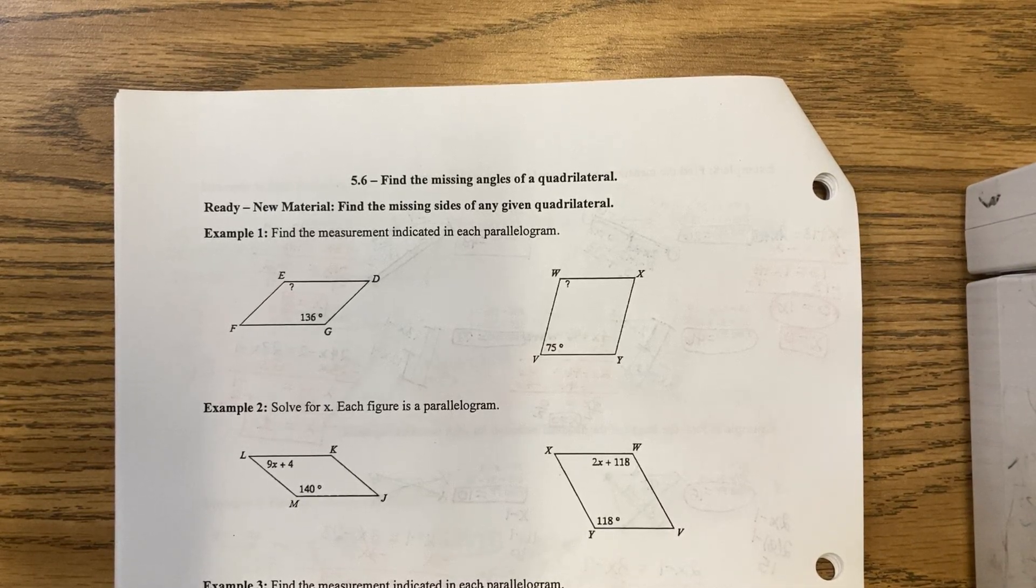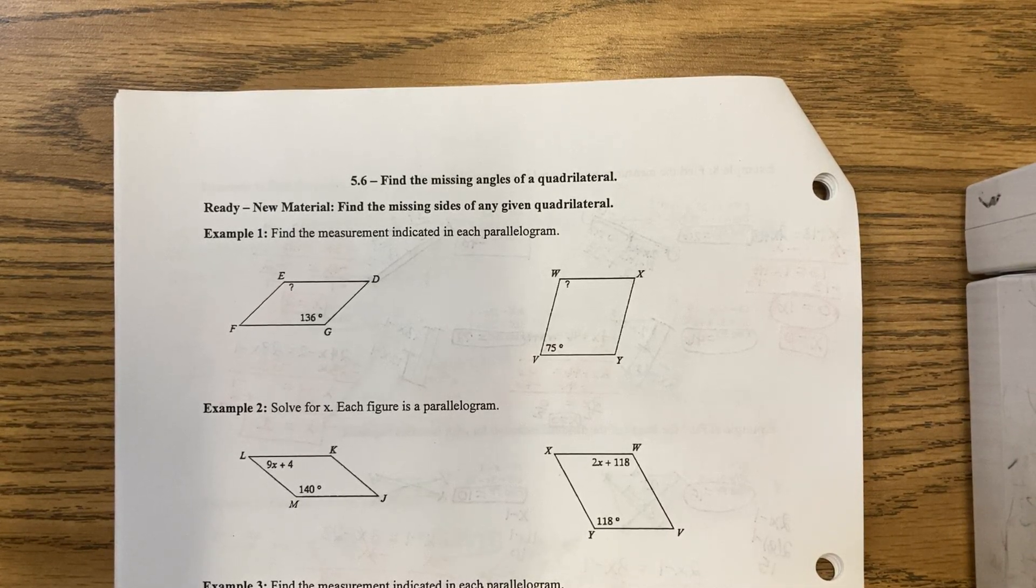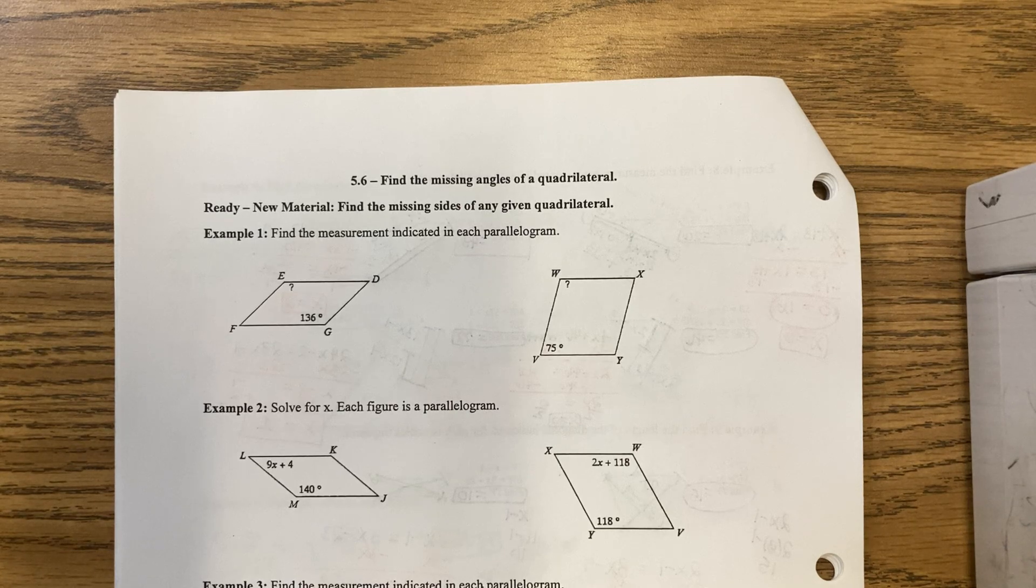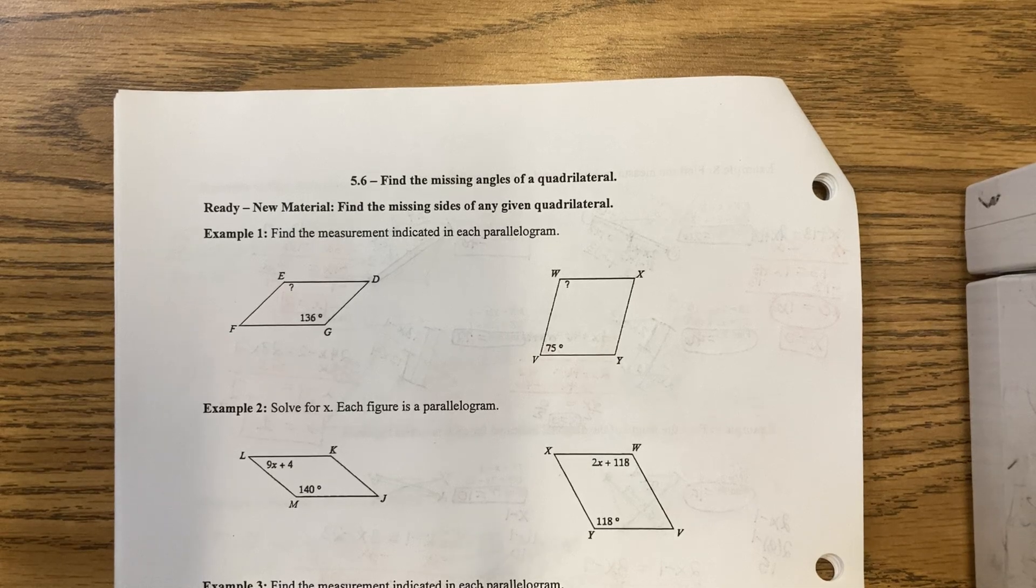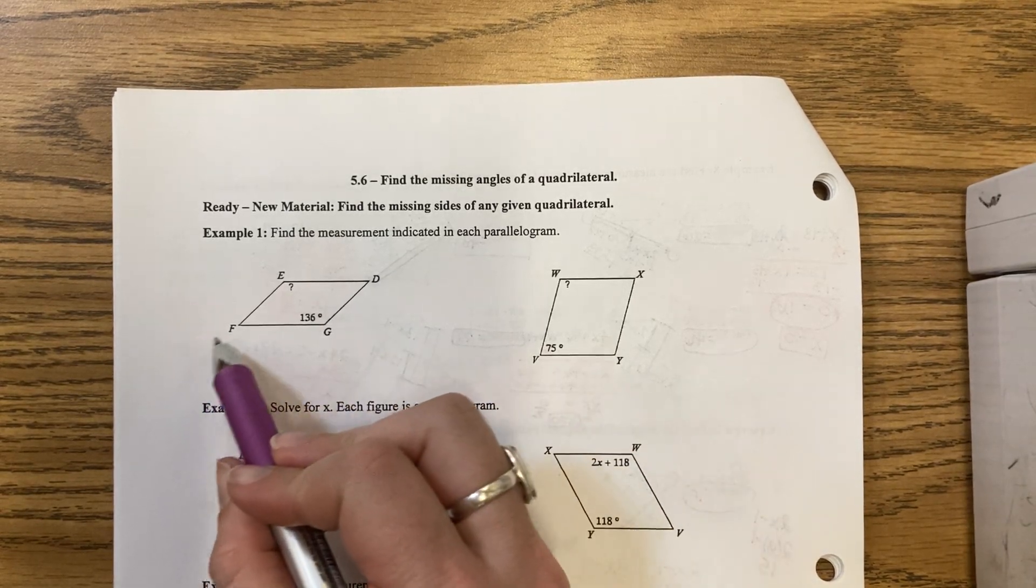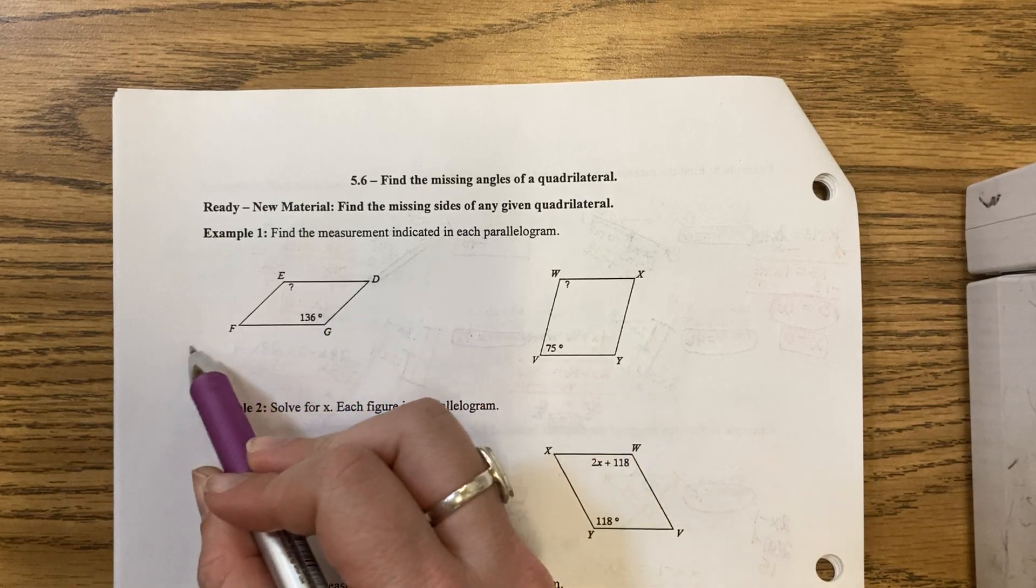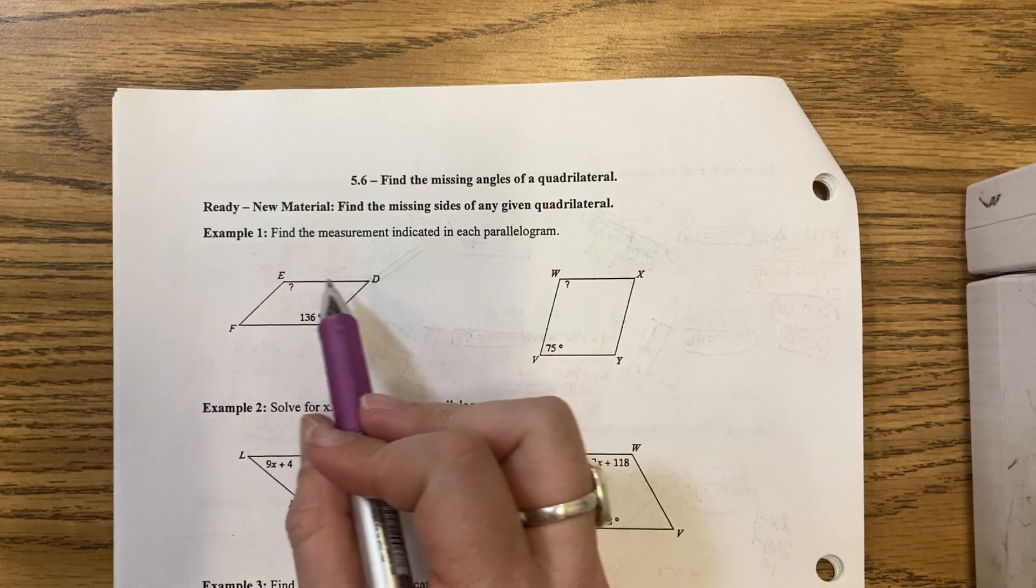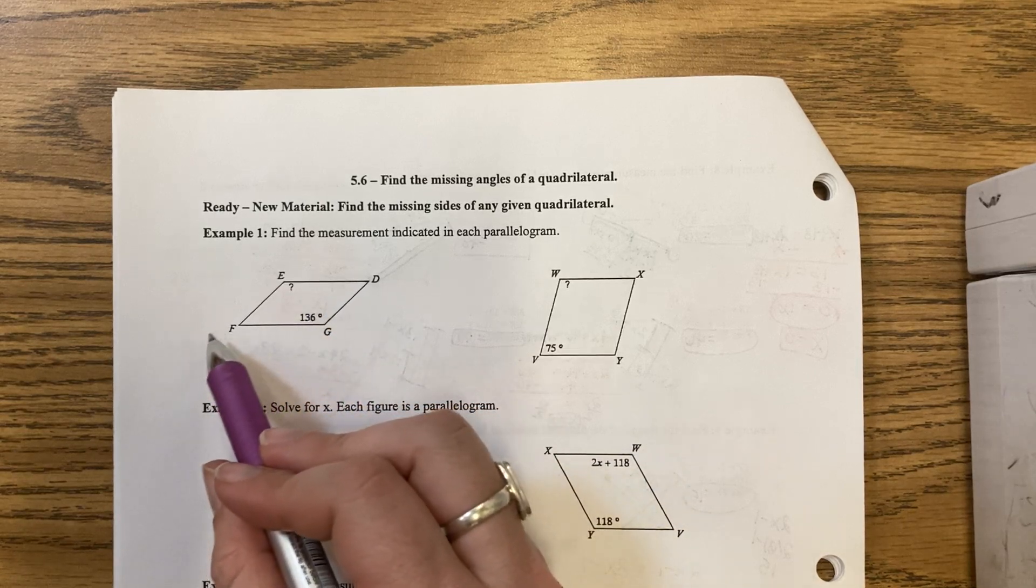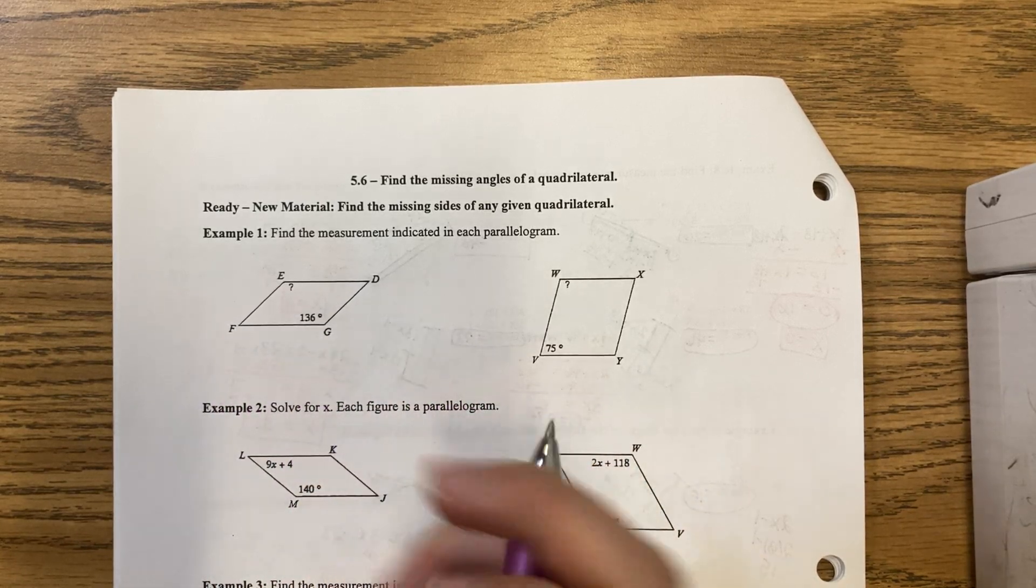For section 5.6, we'll be going over finding missing angles in a quadrilateral. Quadrilaterals have basically two triangles stuck together. Because of that, all four angles will add up not to 180, but to 360.